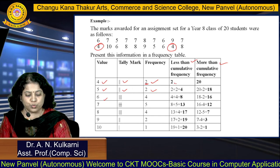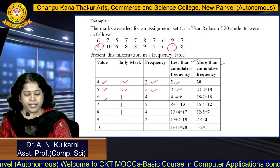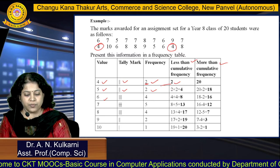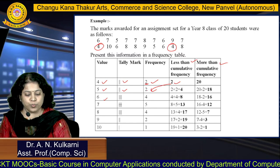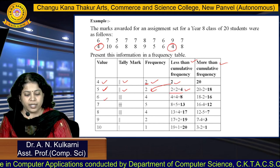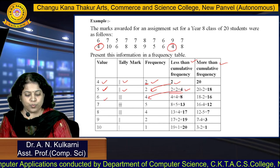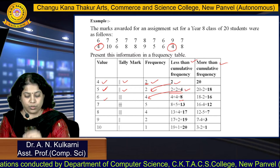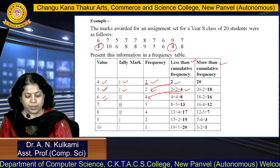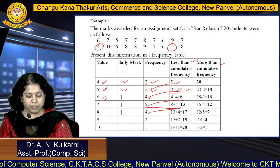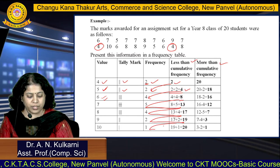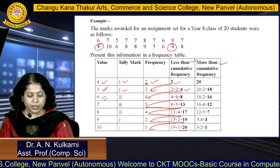To calculate the less than cumulative frequency, start from the first frequency of 2. Then add successively: 2 + 2 = 4 for the next data item; 4 + 4 = 8 for the next; 8 + 5 = 13; 13 + 4 = 17; 17 + 2 = 19; and 19 + 1 = 20. The final value of 20 equals the total frequency.